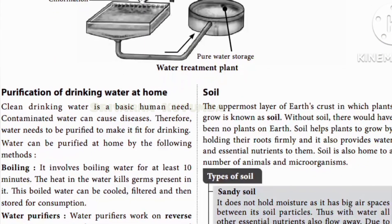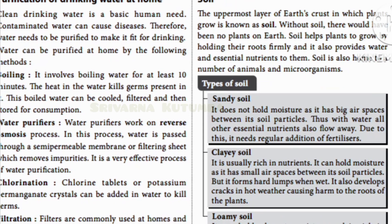Now we move to soil. Soil is the uppermost layer of the earth's crust in which plants grow. Without soil there would be no plants on earth. Soil helps plants grow by holding their roots firmly and also provides water and essential nutrients to them. Soil is also home to a number of animals and microorganisms.